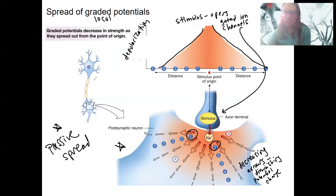And they, when they're initiated, either at the dendrites or cell body, right? That's where local potentials or graded potentials occur. They may or may not cause an action potential.